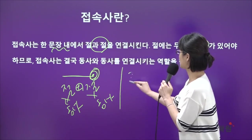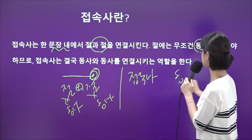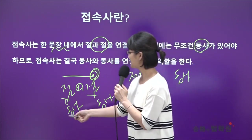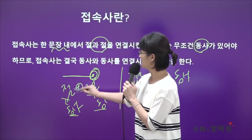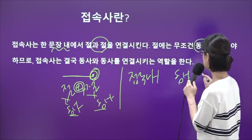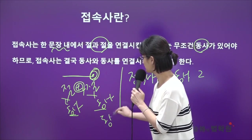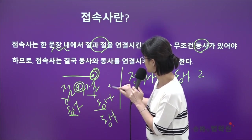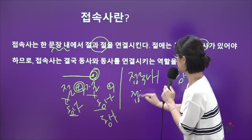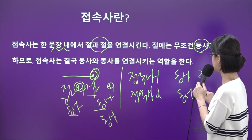이때 계산해야 되는 게 접속사의 개수와 동사의 개수예요. 동사가 두 개일 때 접속사 하나가 필요하죠. 접속사 하나는 동사 두 개. 동사를 하나 더 넣고 싶으면 이때 접속사가 또 하나 필요해요. 결국 접속사가 두 개일 때 동사의 개수가 세 개 나옵니다.